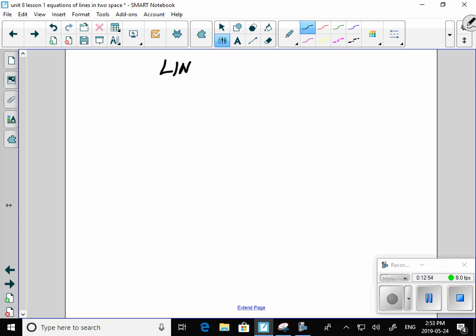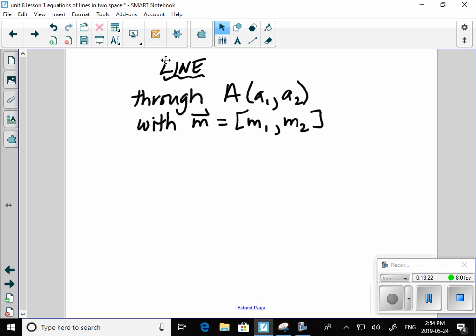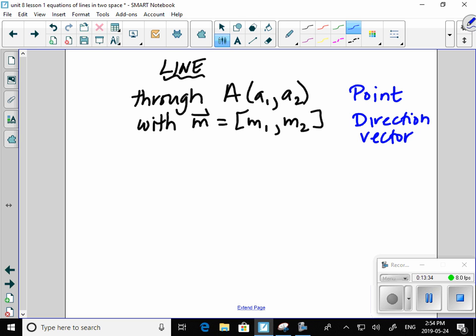So, for a line, if we are given a point with direction vector. This is a point with components a1, a2. This is a direction vector. And your m1, m2 are direction numbers, by the way.